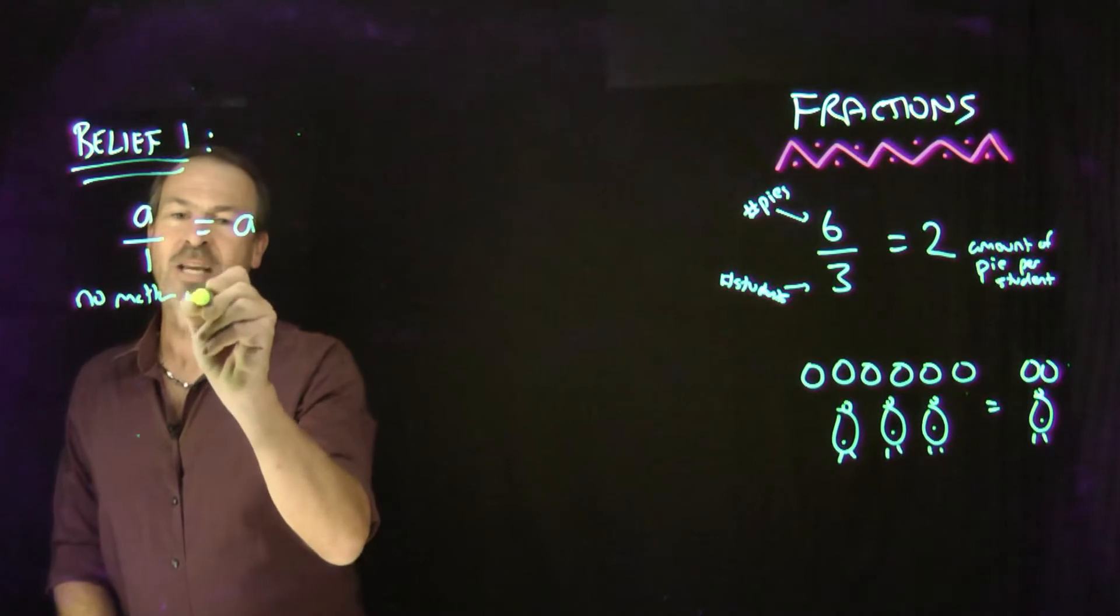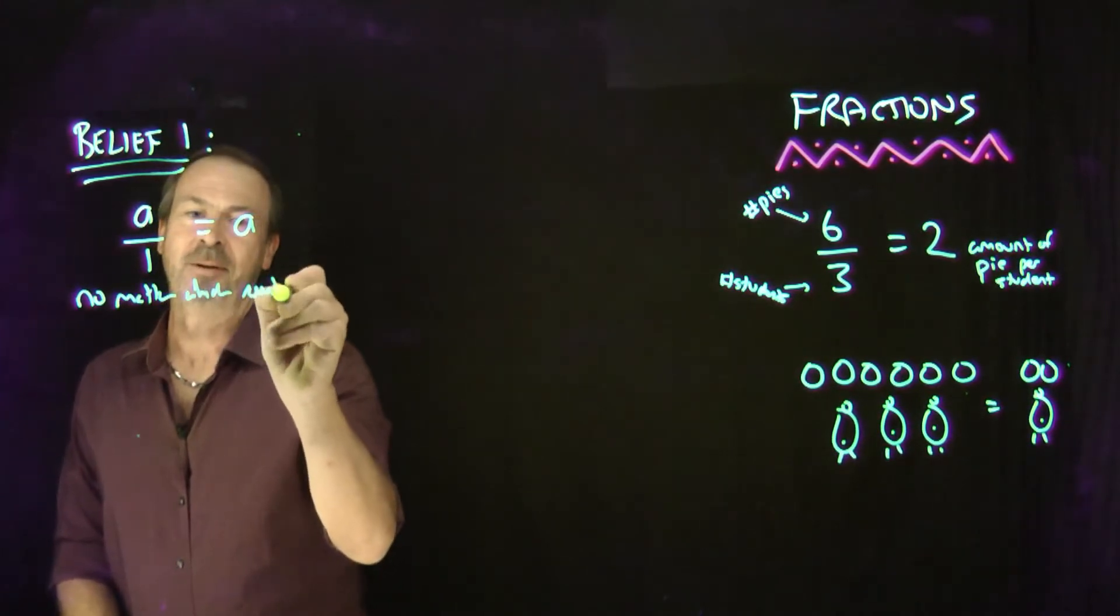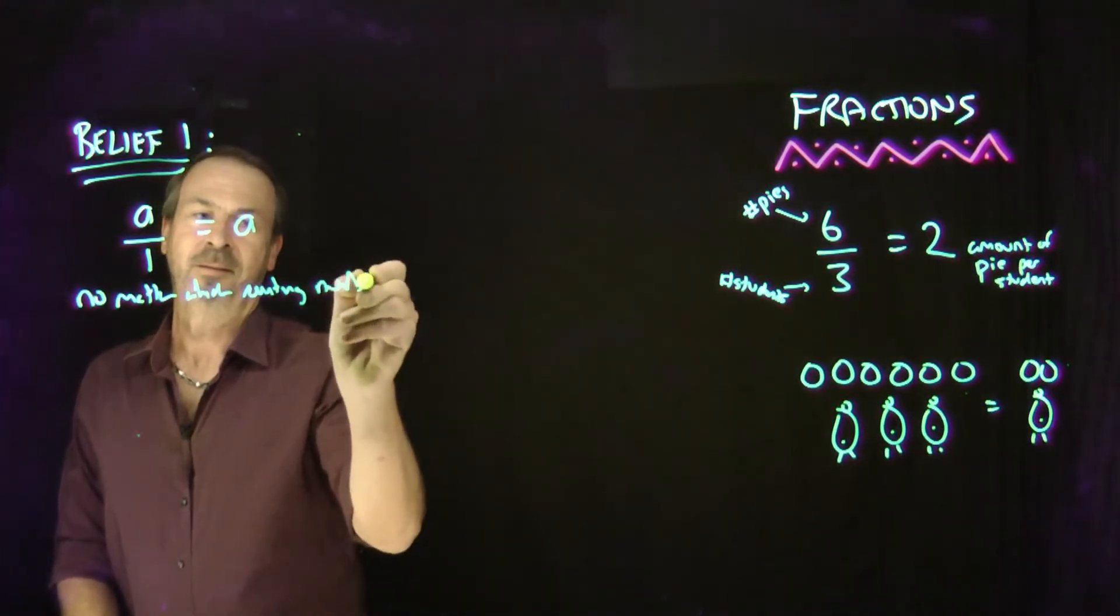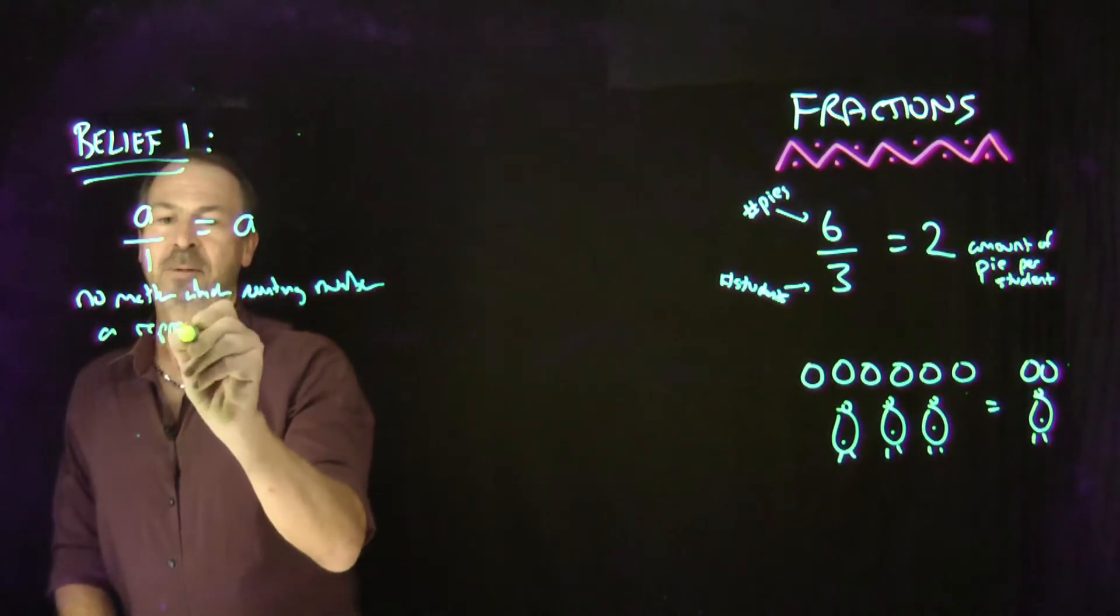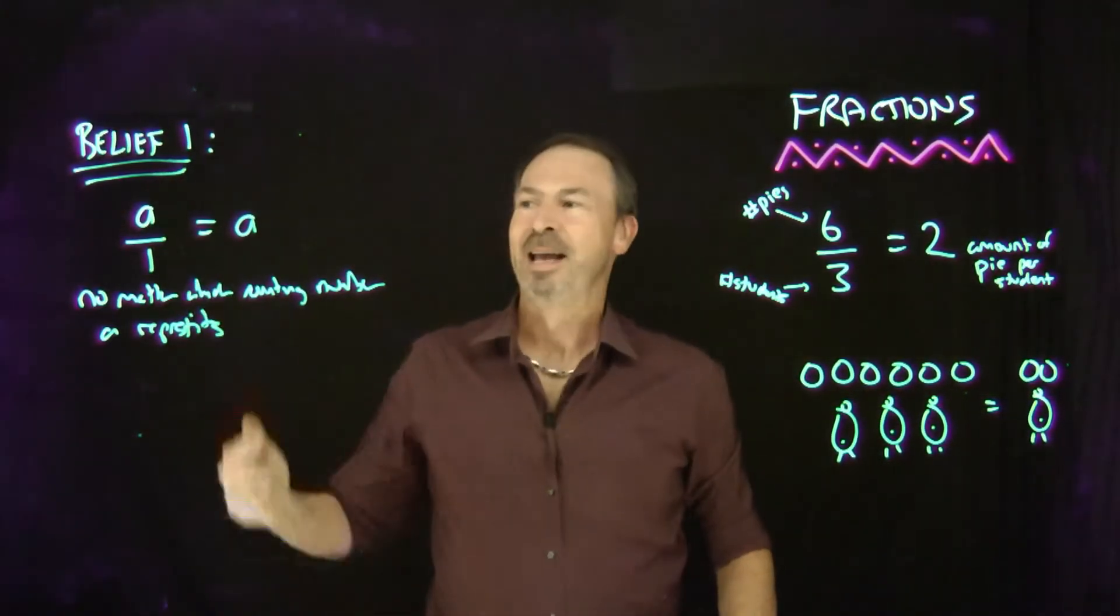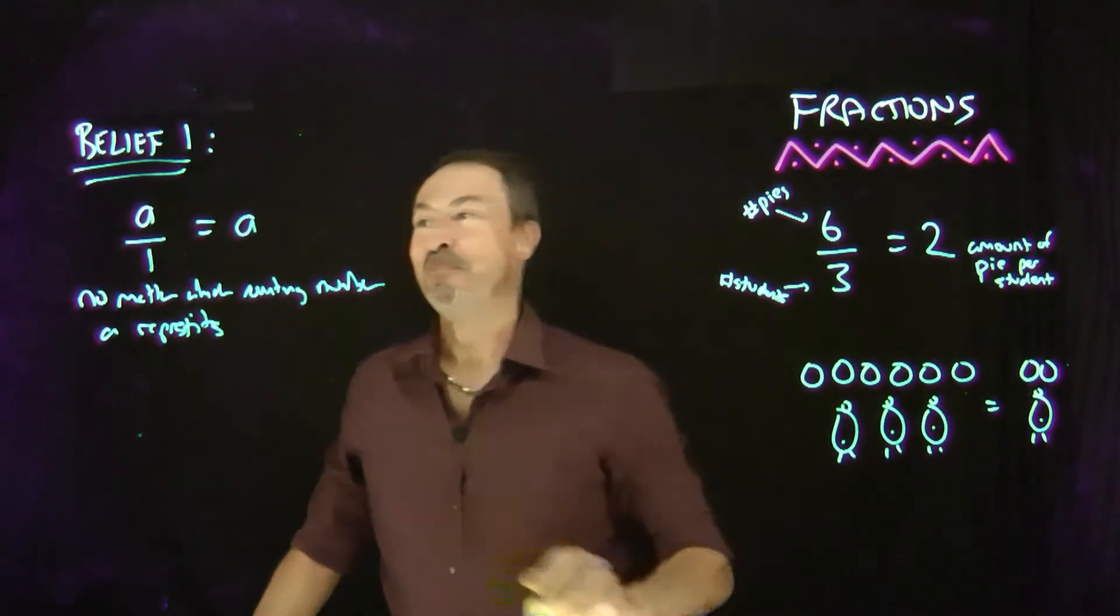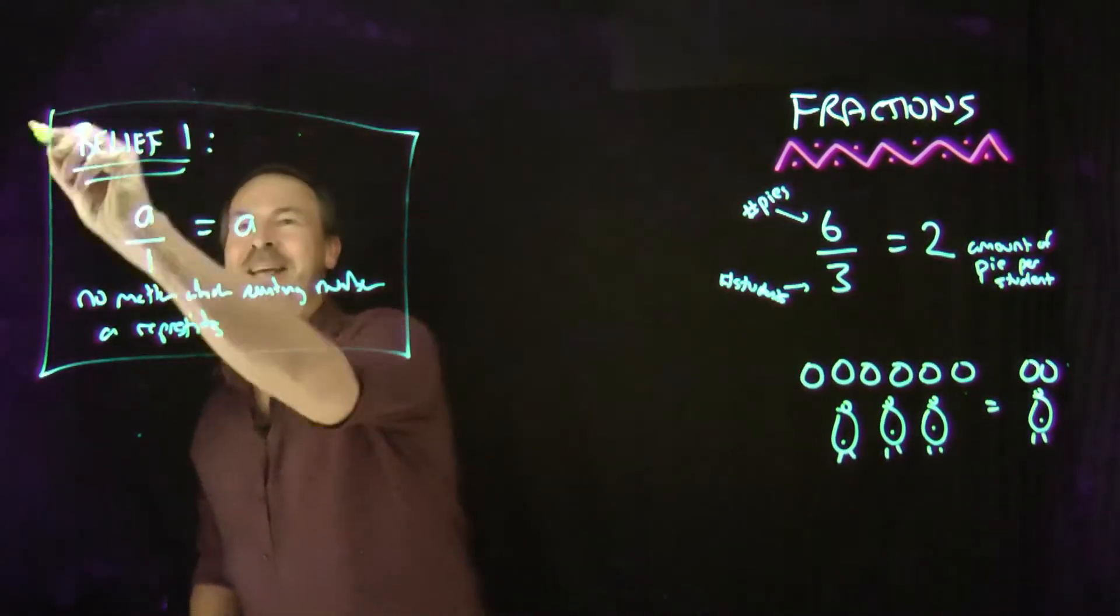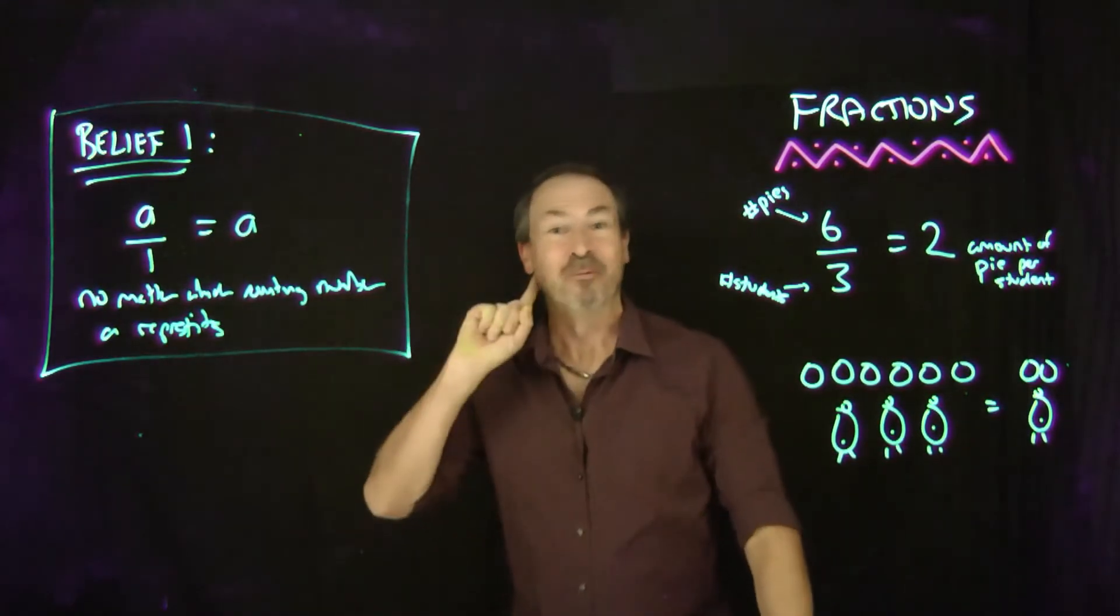No matter which counting number 'a' represents—be it 5 or 20 or 1,003 or some other number—'a' pies for one student is 'a' pies per student. Beautiful! One down, four to go. Let's do the second one right now.